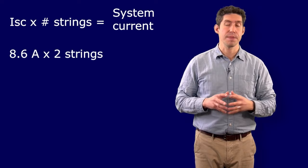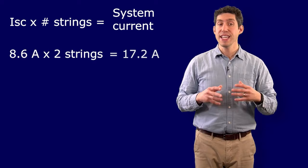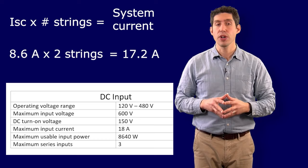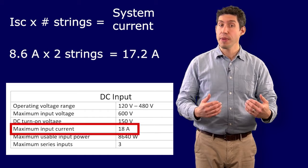The next step is to look at the maximum current that could be produced by the photovoltaic modules, which is the short circuit condition. We're now working on the assumption that we'll have two series strings, and each string has a short circuit current of 8.6 amps. 8.6 amps multiplied by the two strings that we determined previously is 17.2 amps. Looking at the specification sheet for the inverter, we see the maximum input current for that inverter is 18 amps. So we're below the maximum input current allowed for the inverter.